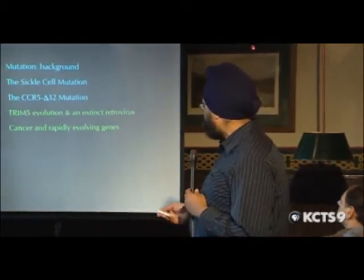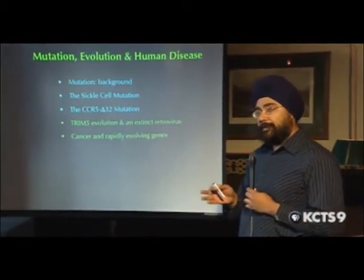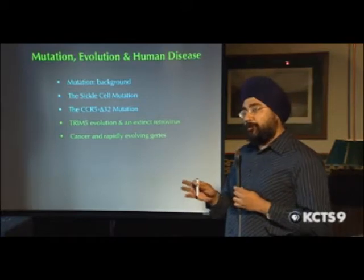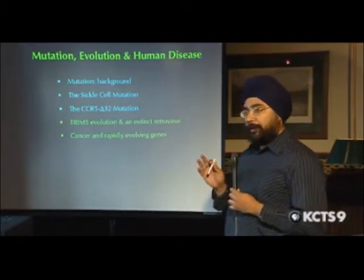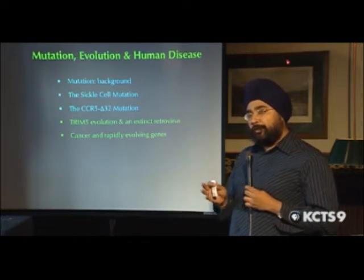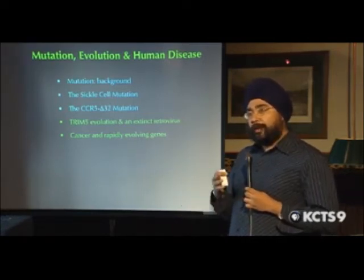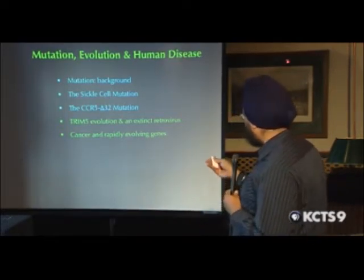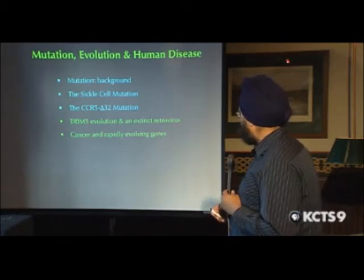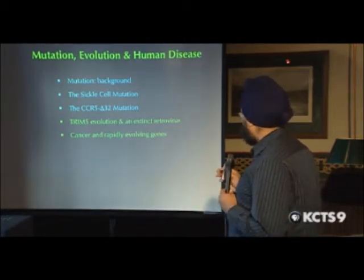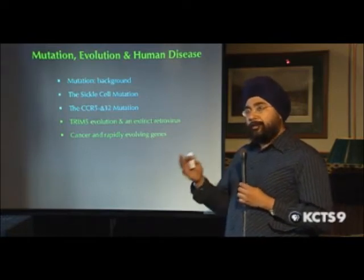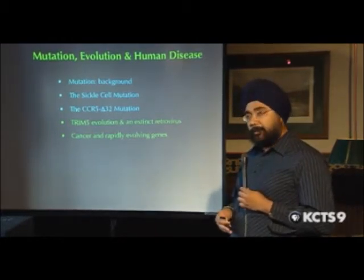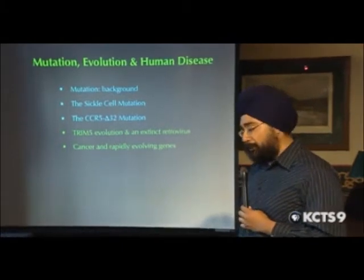I'm going to talk about two case studies. One is the sickle cell mutation, and one is a CCR5 Delta 32 mutation. Both of these are incredibly important examples of how mutations that are actually quite deleterious can have beneficial outcomes in certain contexts. Then I'm going to talk about a case study from my lab about an antiviral gene called TRIM5 and an extinct retrovirus, and how by studying extinct retroviruses we can gain insights into how present-day retroviruses could potentially be treated. I'll end with some comments on cancer.